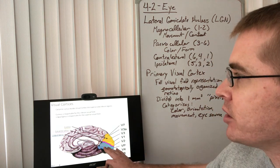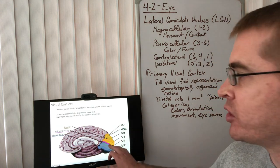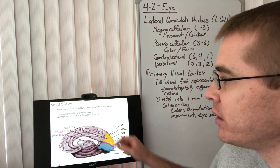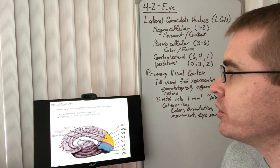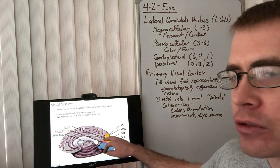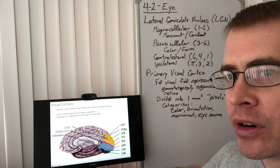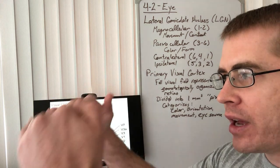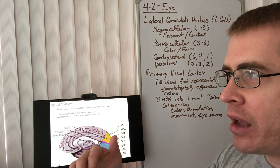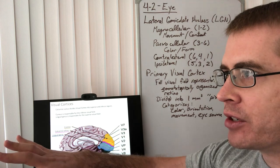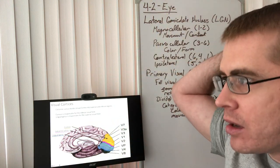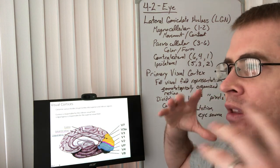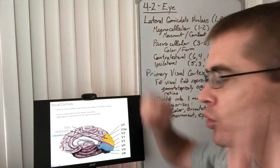In the mid-sagittal view of the brain, the calcarine sulcus divides the occipital cortex into the cuneus and the lingual gyrus. The cuneus is responsible for the inferior visual field — everything below the midline of our vision is being transmitted up to the cuneus. Conversely, the lingual gyrus is getting everything from the upper visual field.